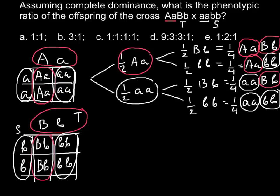As you can see, we have all four different phenotypes, so the ratio would be 1 to 1 to 1 to 1, because each outcome has a probability of one quarter. Therefore the correct answer would be C.